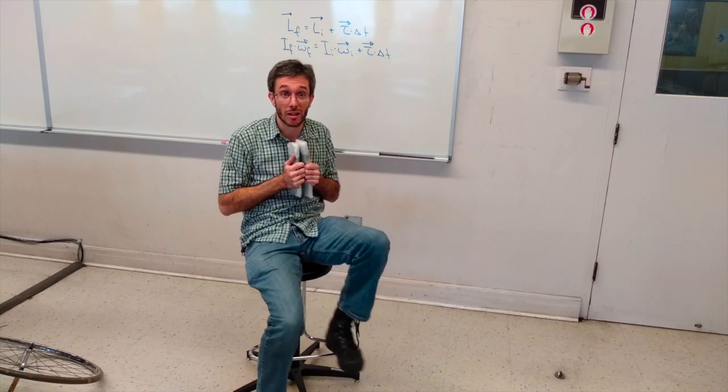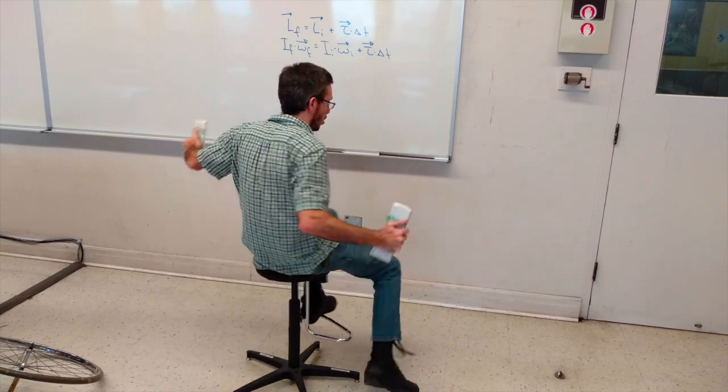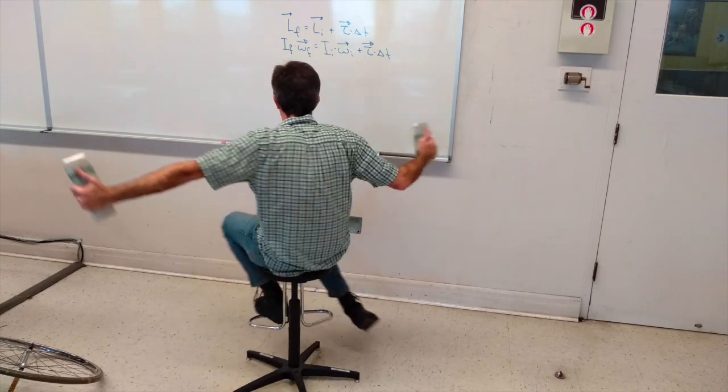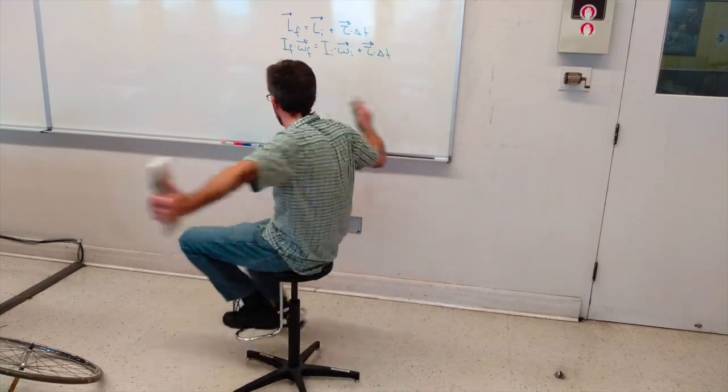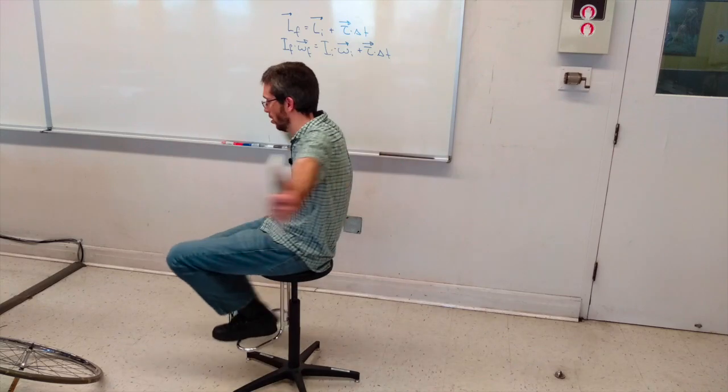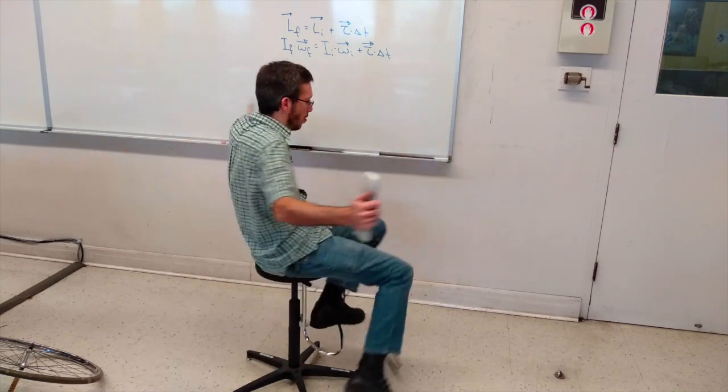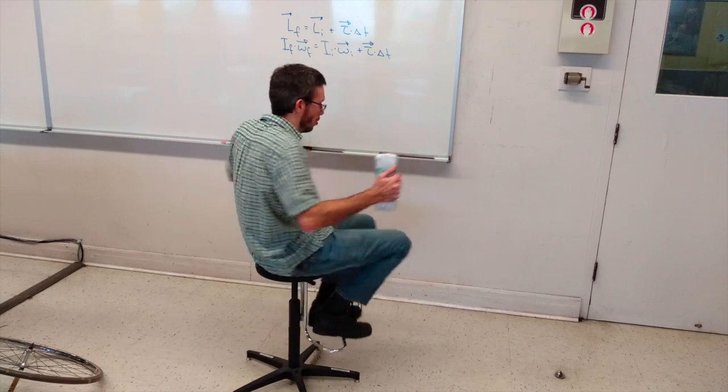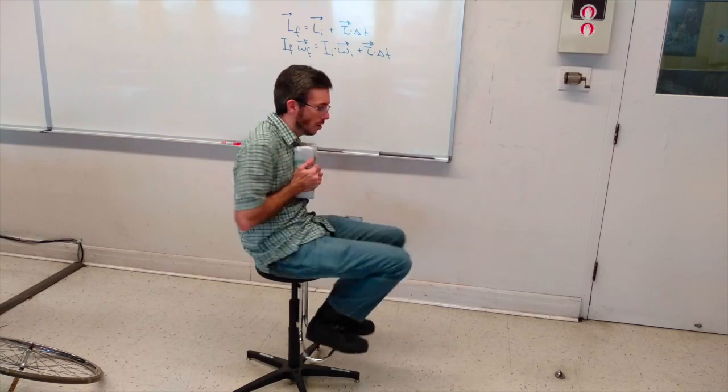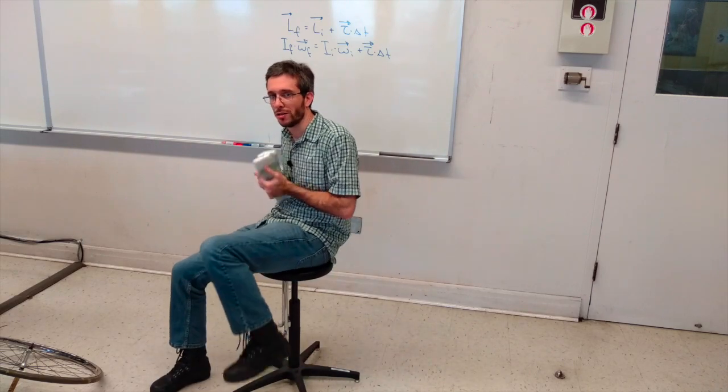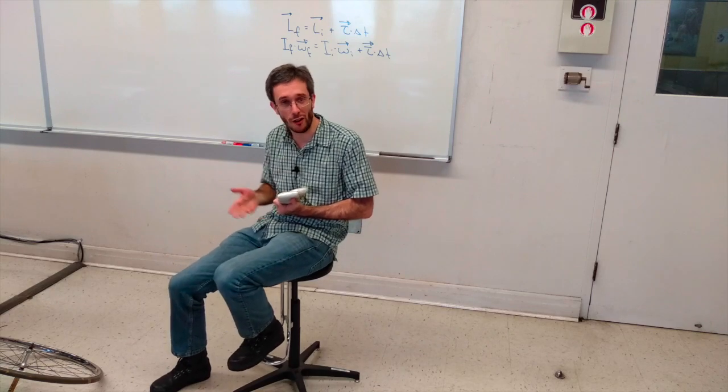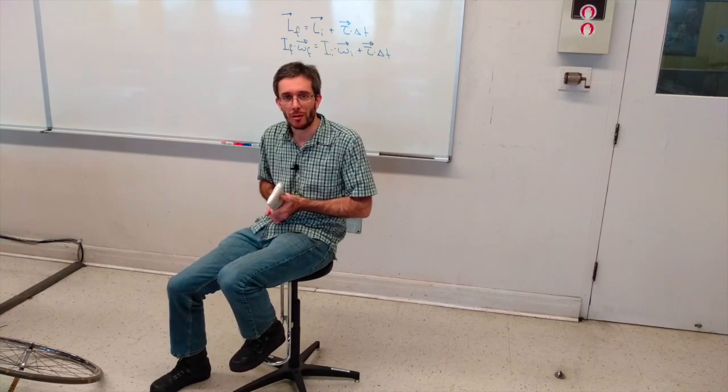Let me do this in the other direction to not get too dizzy. So, big rotational inertia, low angular velocity. Now, I'm putting my inertia small, which gives me a bigger angular velocity. And then, at the end, I stop myself by applying some torque from the ground.